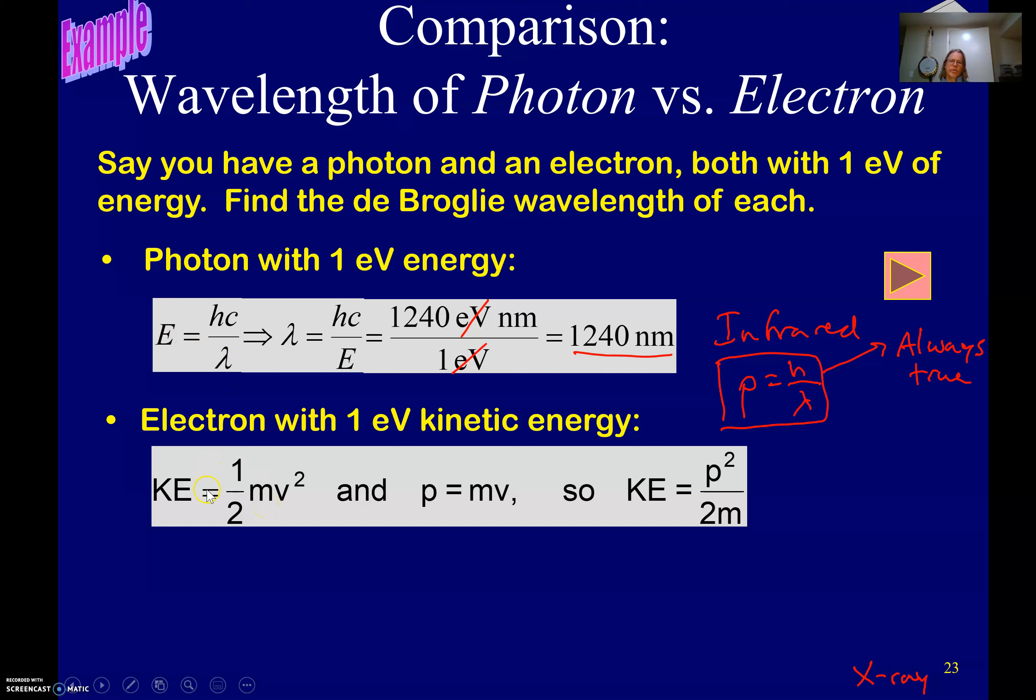So we have two different equations for energy that we use. Even though electrons can have wave-like properties and electromagnetic energy can have particle-like properties, we have different equations for energy, though.